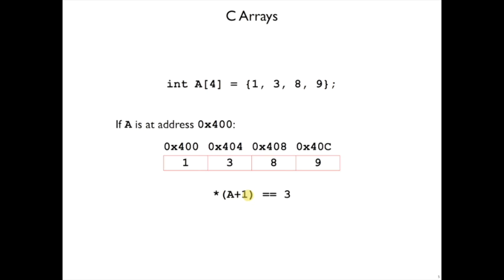1 doesn't mean 1 at the address level, it means the size of one integer, since a is of type int star. So that's why we get the value that's at hex 0x404, as opposed to hex 0x401. In other words, a plus 1 is really exactly equal to the integer pointer 0x404.